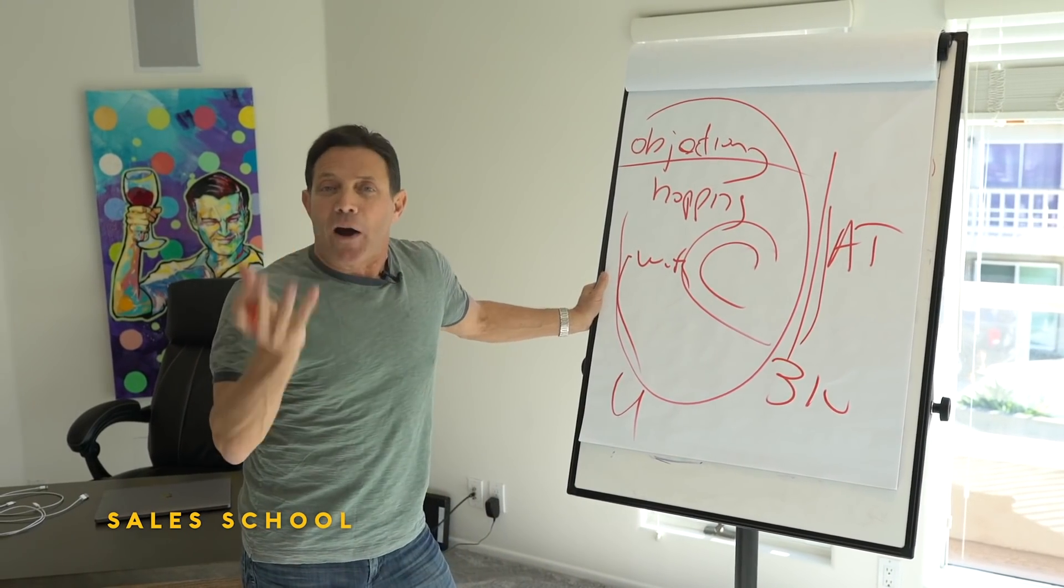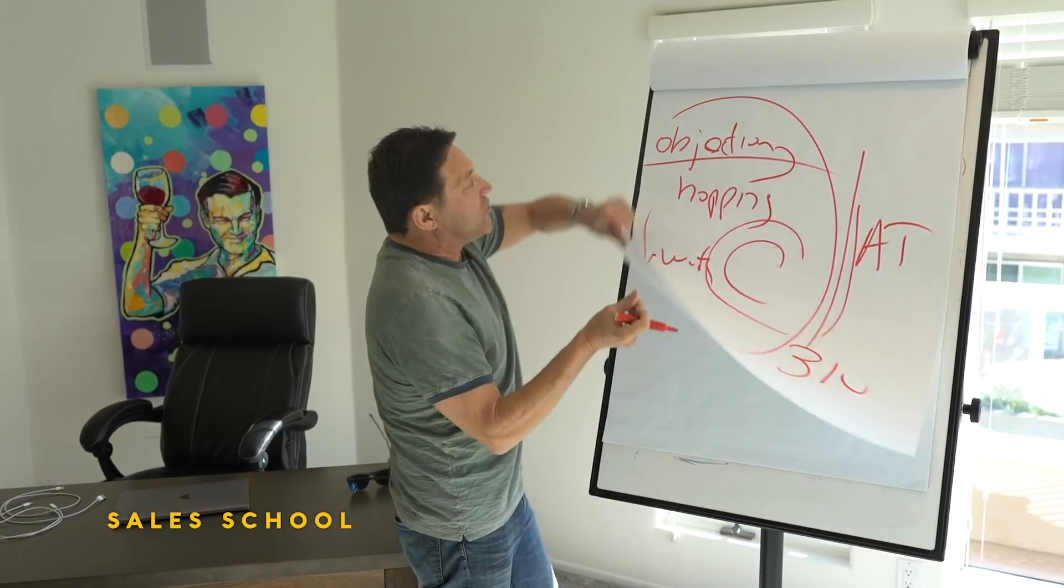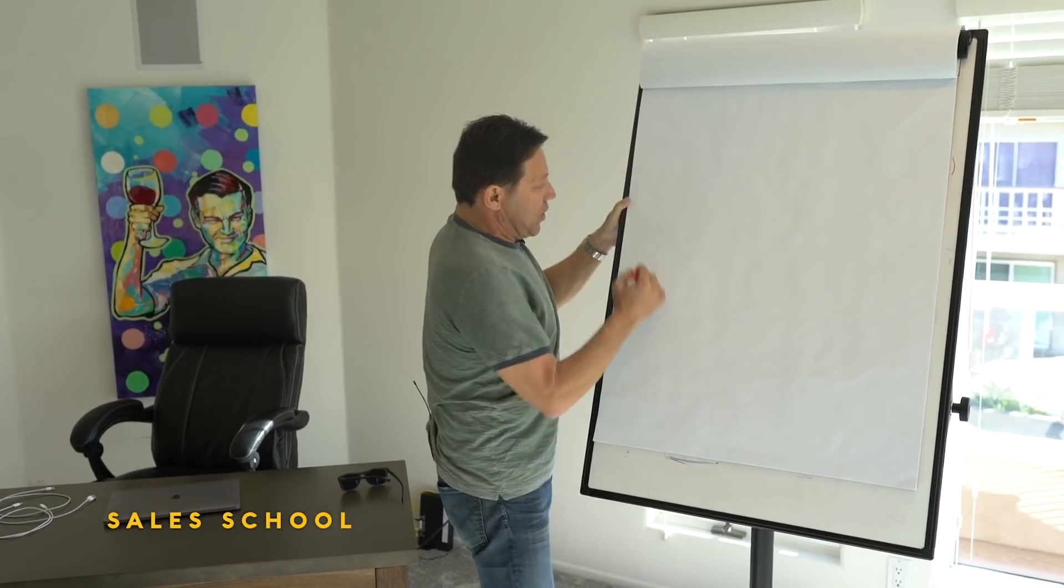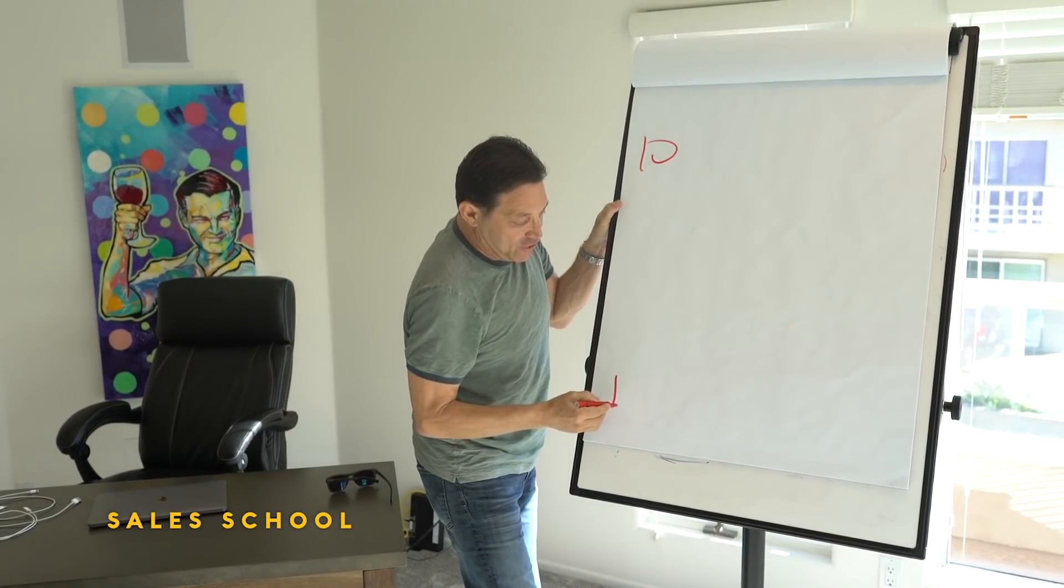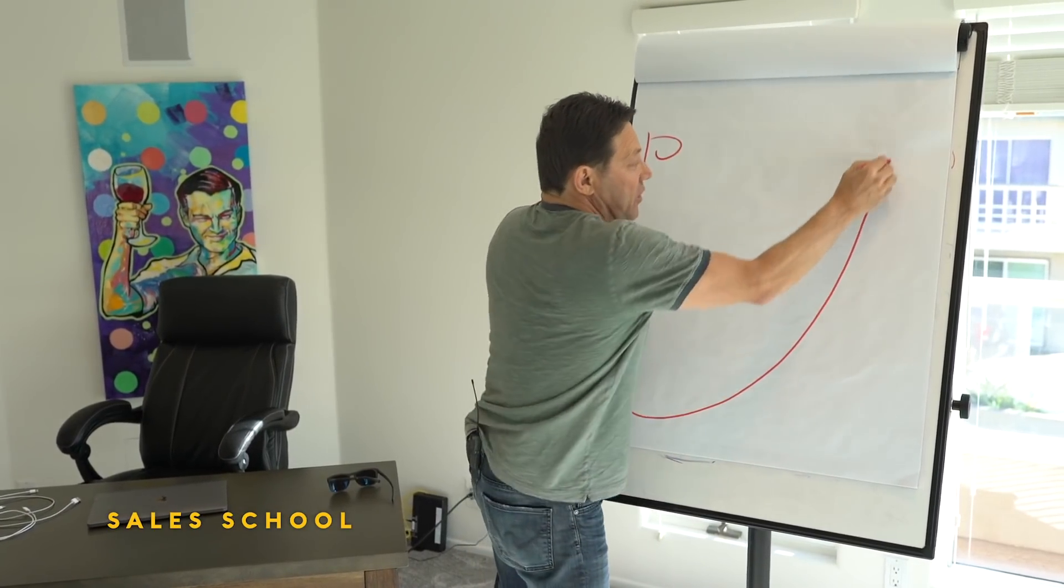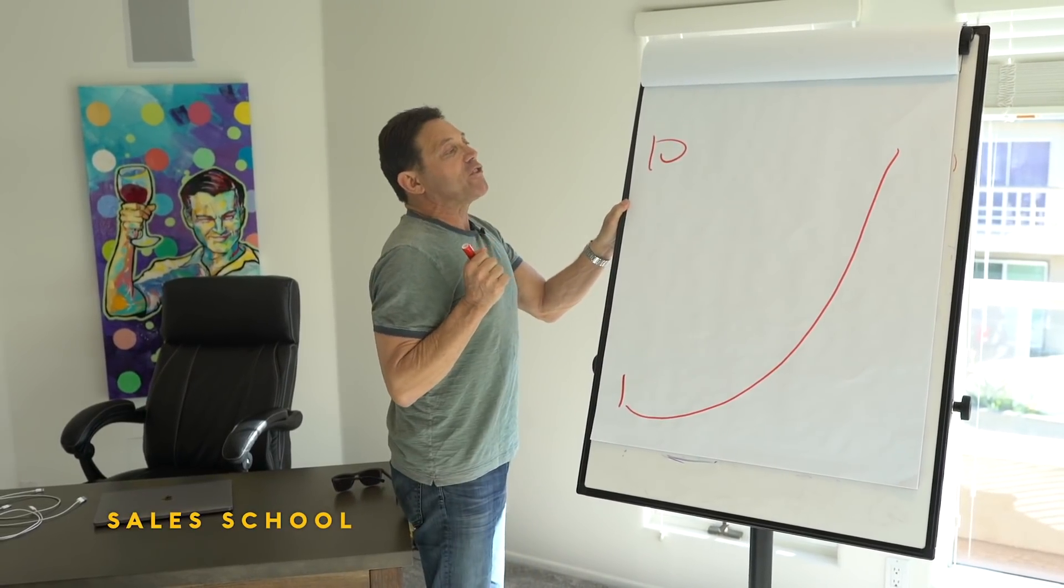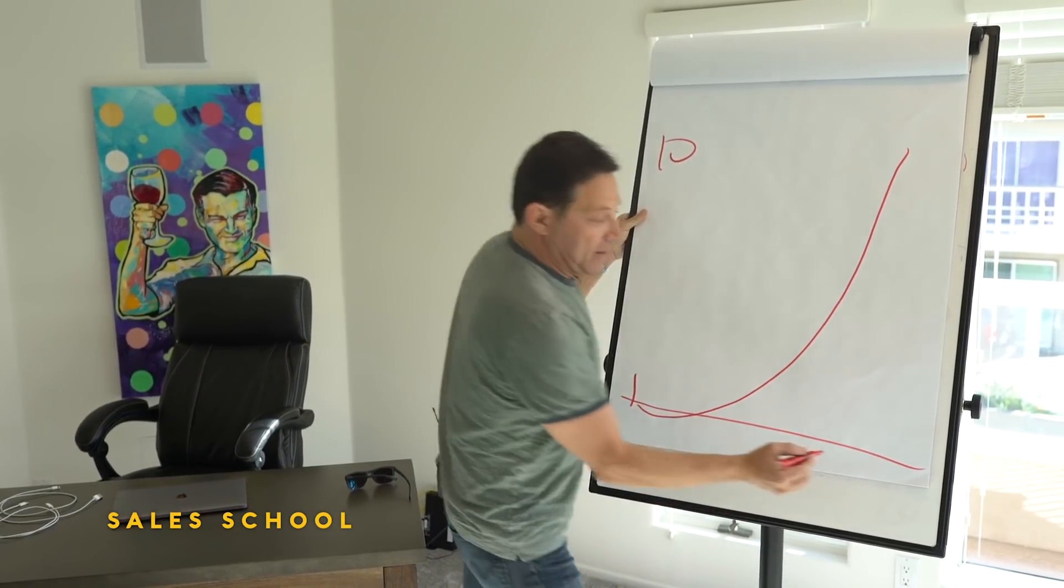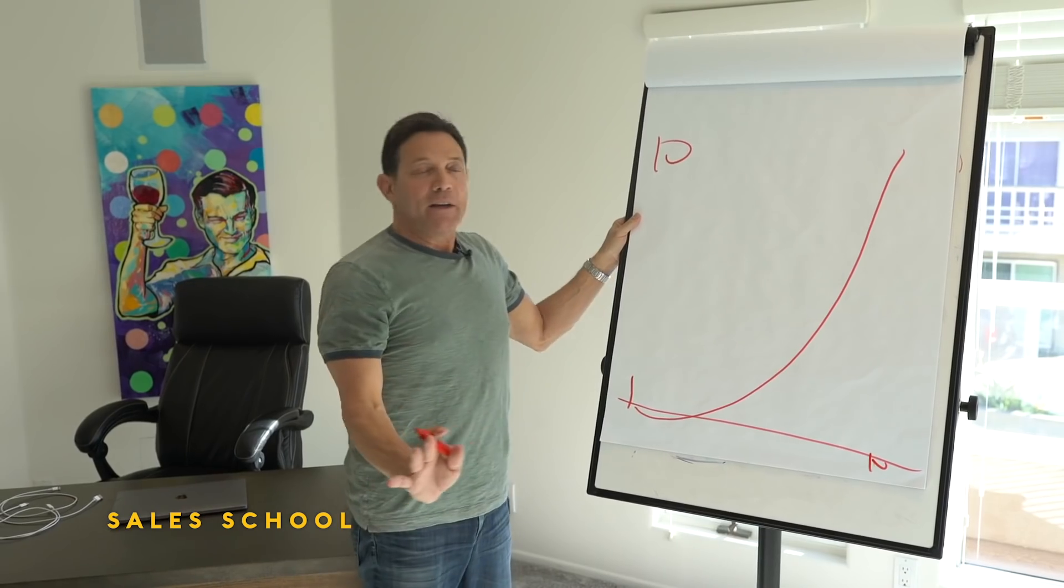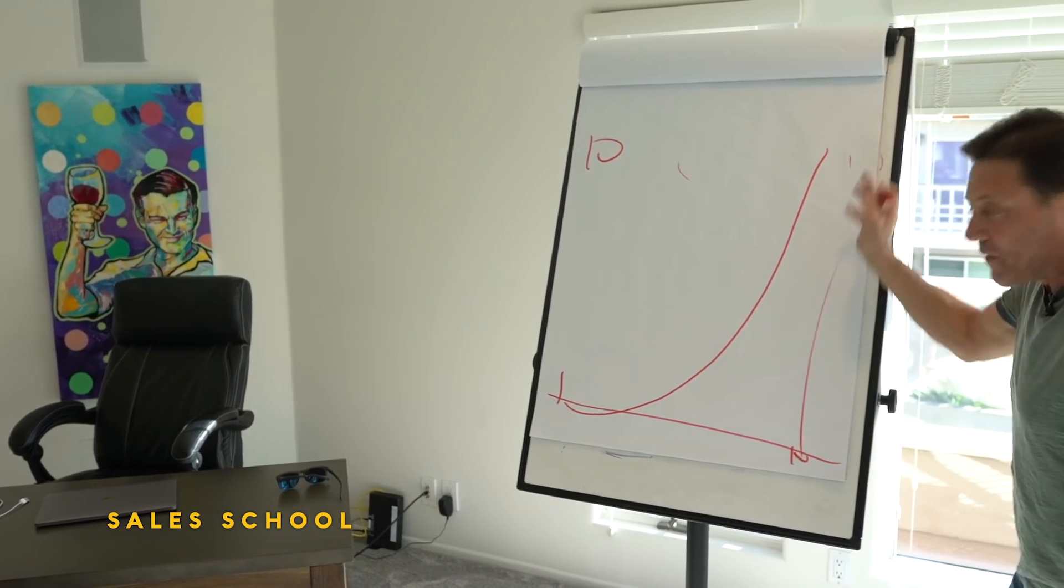Let me draw this out for you in a graph. Imagine this is certainty, one to ten. As you go down the sale there's certainty—you go down the straight line, the certainty rises. Imagine that someone has an action threshold that is a ten, they're very high.